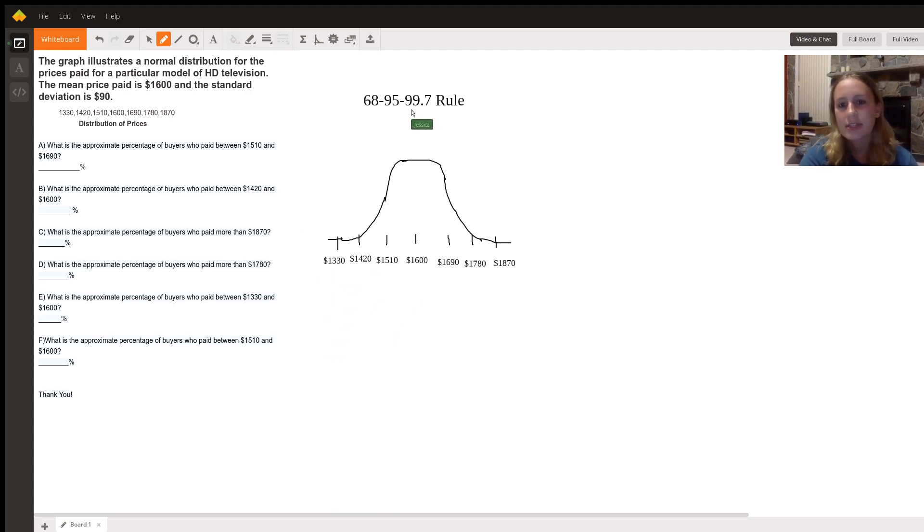So looking at the 68-95-99.7 rule, all this means is that 68% of the data values is going to be within one standard deviation of the mean, which is $1,600. So 68% of the data values are here.